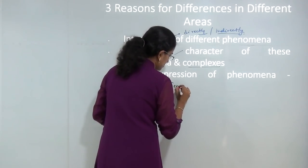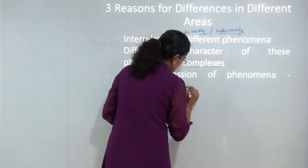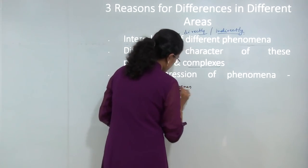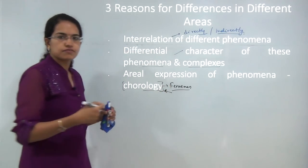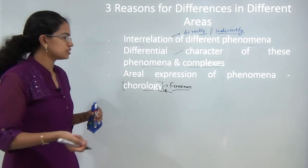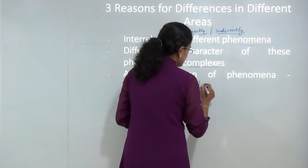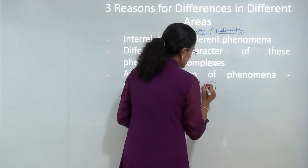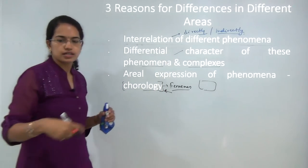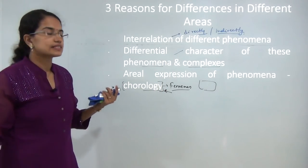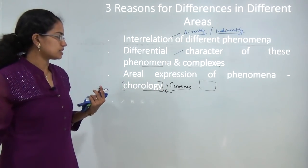Finally, he tried to propound the aerial expression of the phenomena, which he tried to explain in terms of chorology propounded by Feynman, and he said this is a kind of the highest order we could get in the field of regional geography. If we could express an area based on the differences marked, that is the best thing that can be done in the field of regional differentiation.